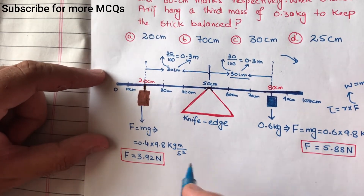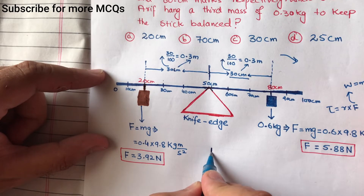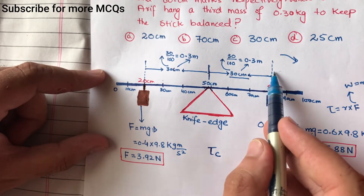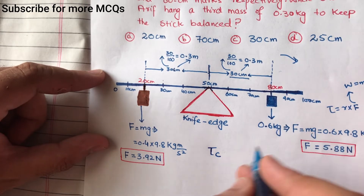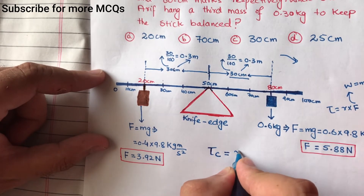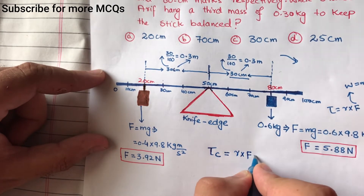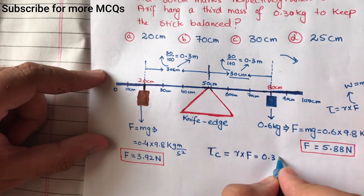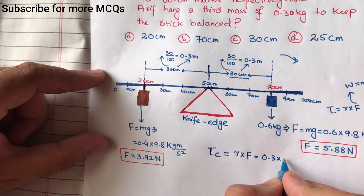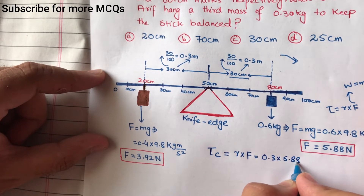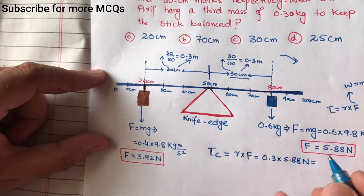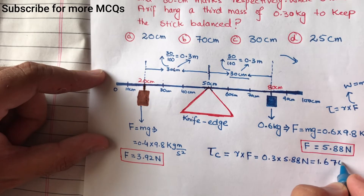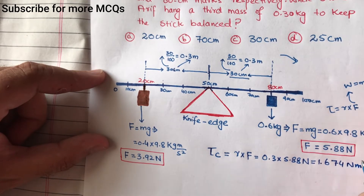سب سے پہلے clockwise torque معلوم کریں گے۔ اس mass کی وجہ سے clockwise torque produce ہوتا ہے — یہ برابر ہے r cross F کے۔ یہاں پر r = 0.3 meter ہے اور F = 5.88 Newton ہے۔ تو یہ equal ہو جائے گا 1.674 Newton meter۔